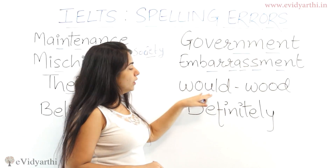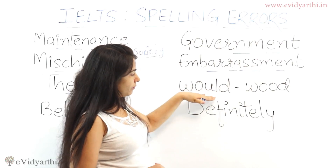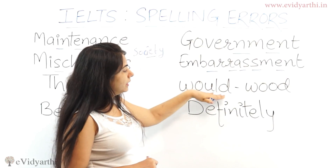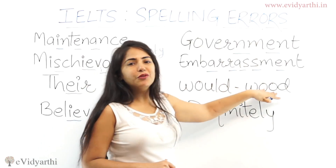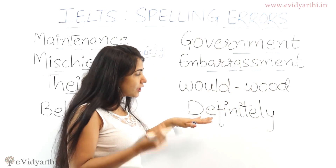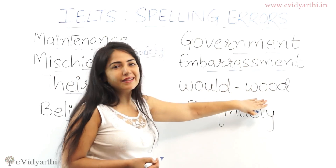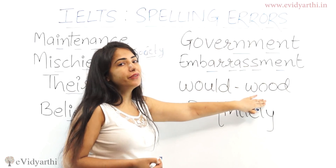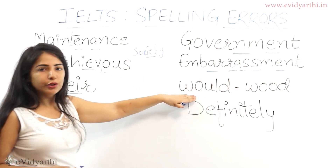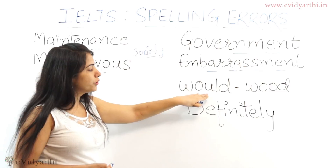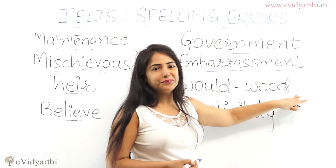Next, people often get confused between 'but' and 'would' because the pronunciation sounds similar, but the meaning is different. You have to be very careful while writing both. The correct spelling is W-O-U-L-D, not W-O-O-T.